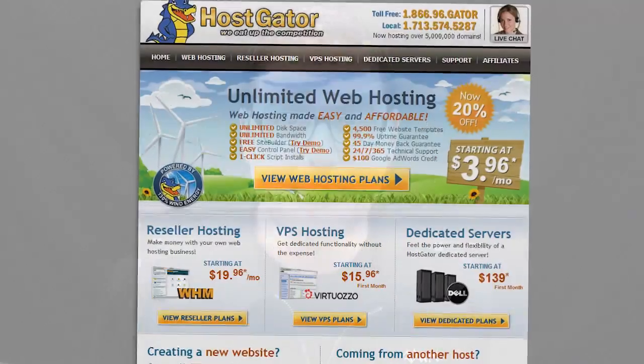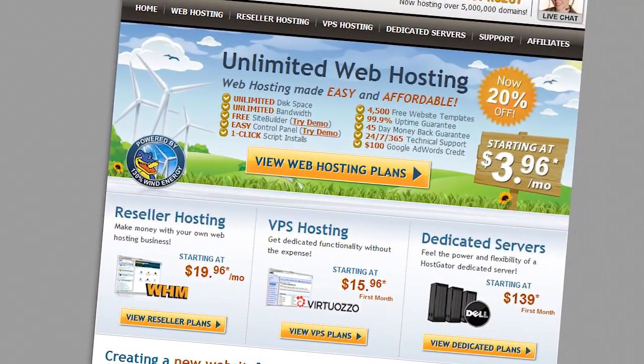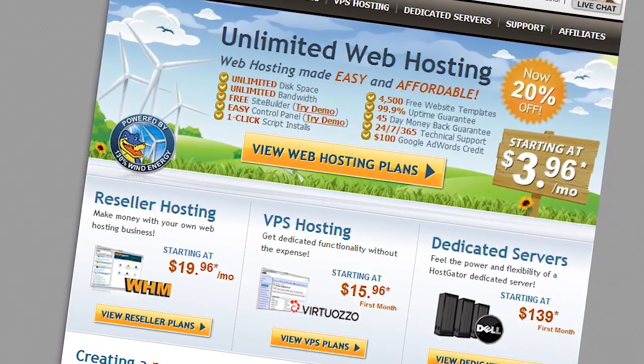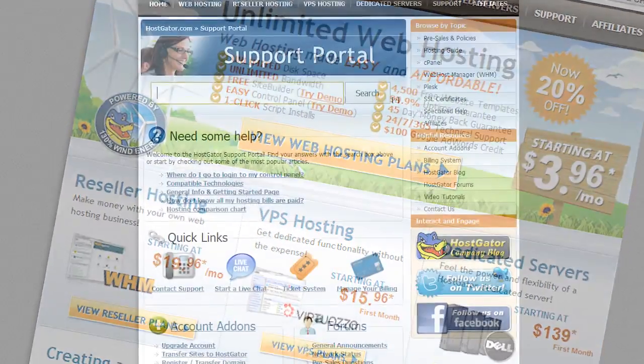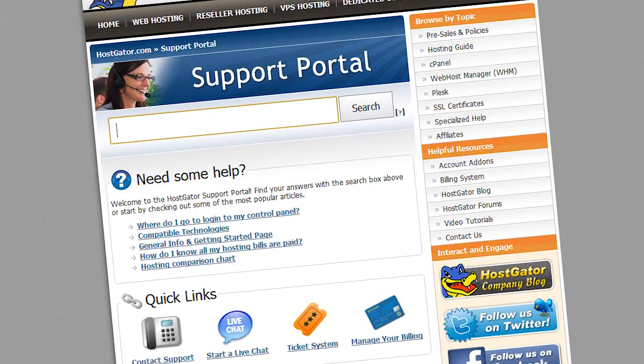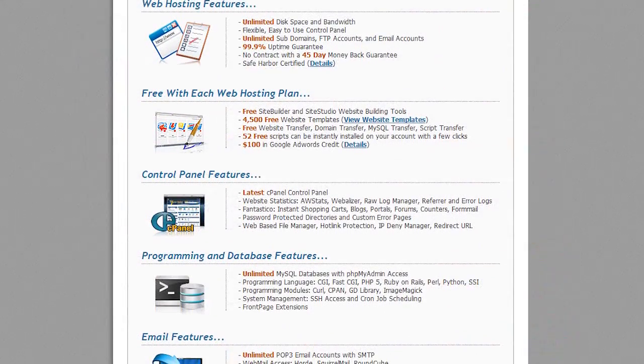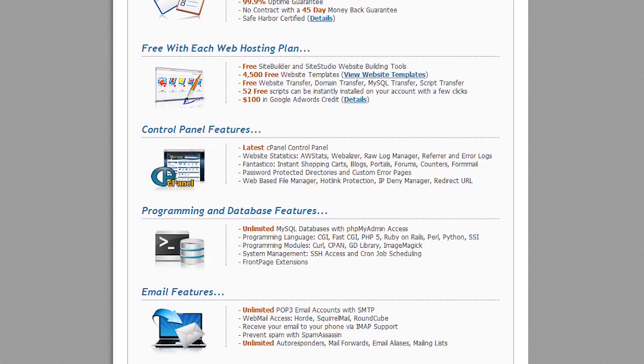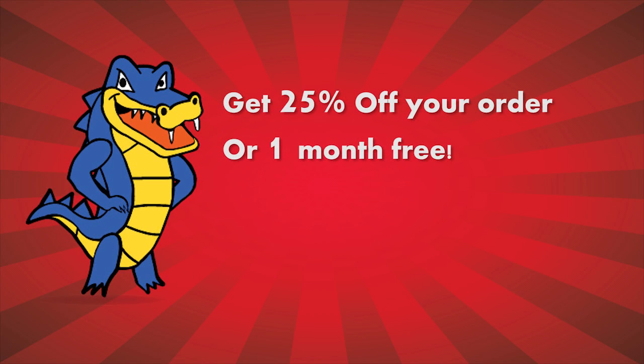If you want a blog or website up and running in minutes, HostGator can hook it up. The servers are 130% powered by wind energy, unlimited disk space and bandwidth is yours, 45 day money back guarantee, and $100 in Google AdWords credit to market your site. And just for being a Scientific Tuesdays viewer, HostGator will give you 25% off your order or your first month free.